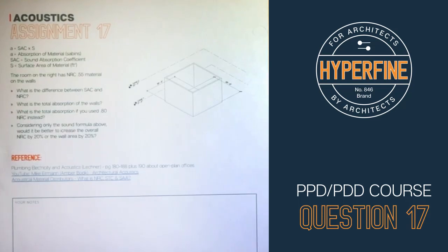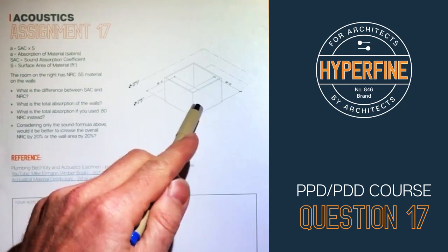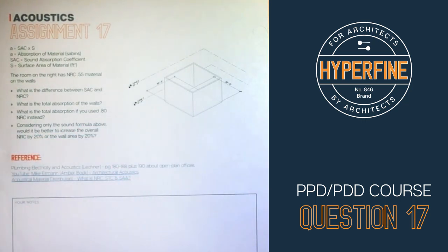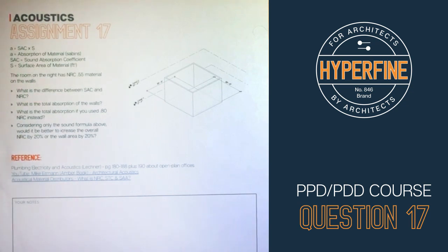Question 17 deals with acoustics. We're given a room on the right with some dimensions, a formula with the different variables defined, and the room has NRC 0.55 material on the walls.